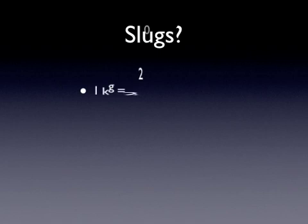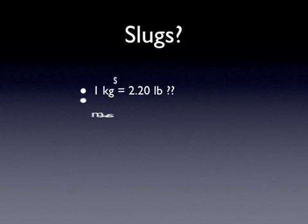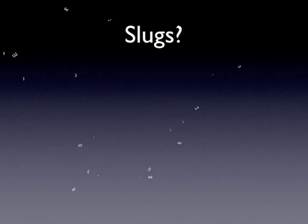I want to get something out of the way right off the bat. On my calculator, it says 1 kilogram equals 2.2 pounds. As you all know now from physics, that's an incorrect statement. Kilogram is a unit of mass, whereas pounds is a unit of force. So we need to be careful about how we use those two different units.